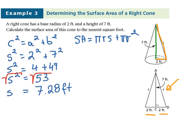Now, we just substitute this. The radius is 2. Surface area is π(2)(7.28) + π(2²). And our surface area will be around 58 feet squared.